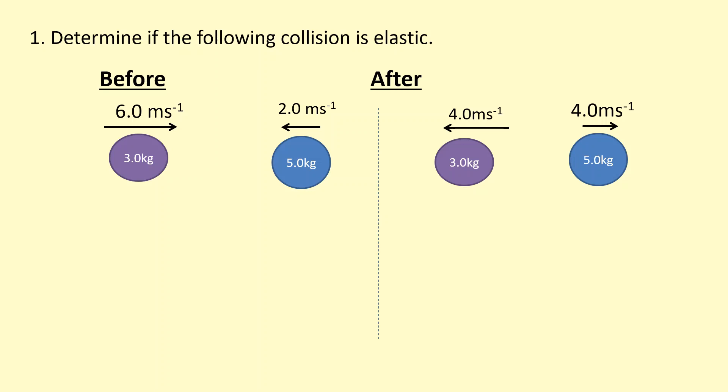Now to find if it's elastic, we need to figure out the kinetic energy of the individual particles. Okay, so for this one, 54 joules—half times its mass times velocity squared. This one is 10 joules. It doesn't matter if it's negative 2 meters per second because when you square something it becomes positive anyway.